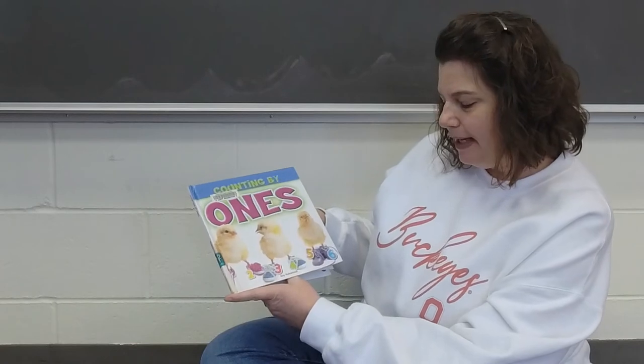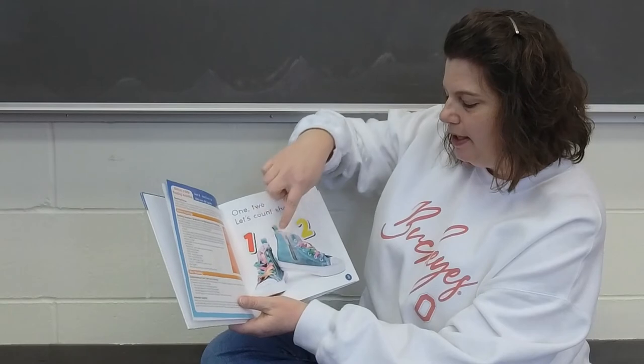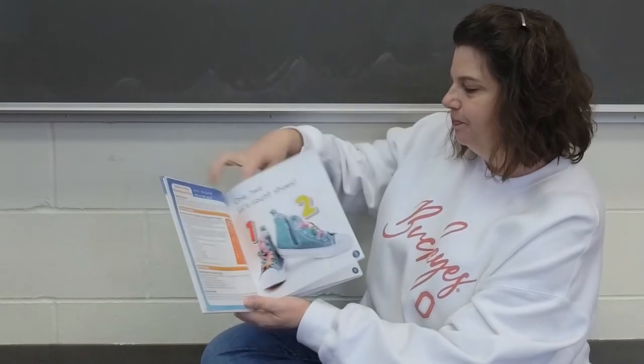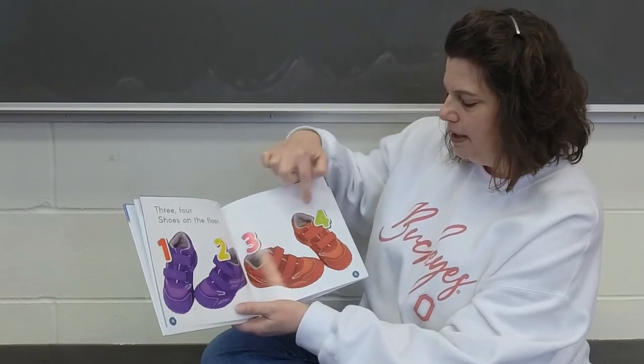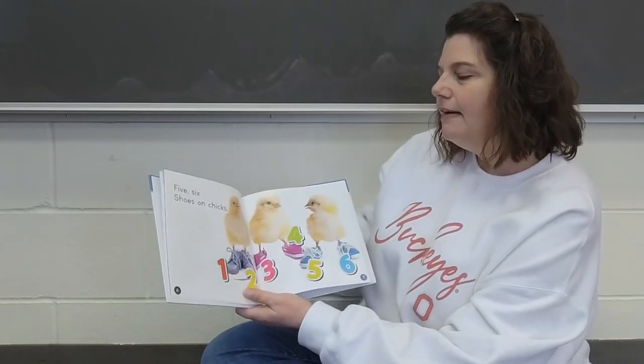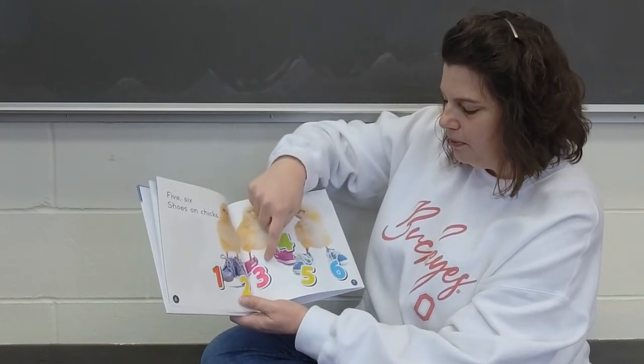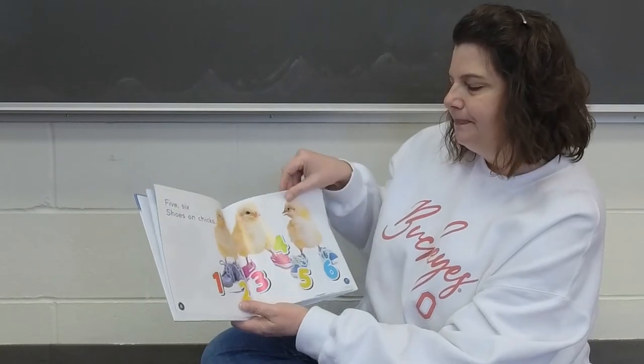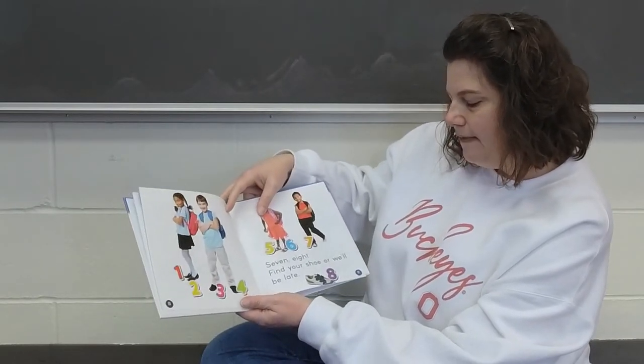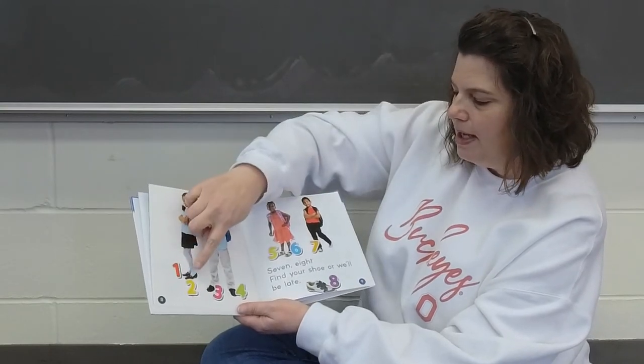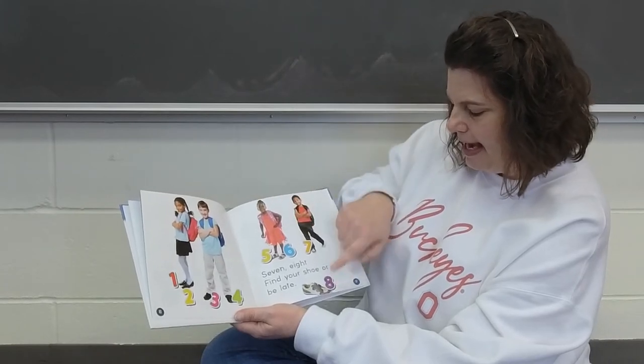Counting by Ones by Kay Robertson. One, two. Let's count the shoes. One and two. Three, four. Shoes on the floor. One, two, three, four. Five, six. Shoes on chicks. One, two, three, four, five and six. Seven, eight. Find your shoes or we'll be late. One, two, three, four, five, six, seven and eight. He didn't have his shoe on, did he?